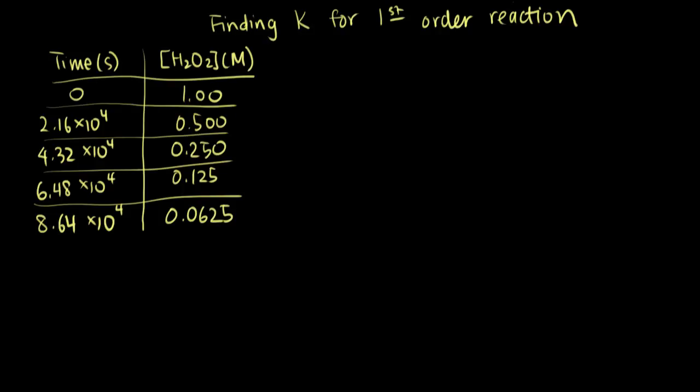In this video, we're going to be talking about how to find the rate constant K for a first-order reaction. We're going to work through this example, and we have a table of data, so we know the concentration of our reactant, hydrogen peroxide, or H2O2, over time.